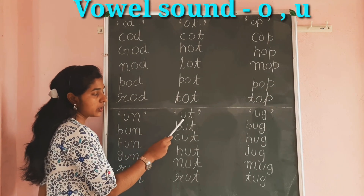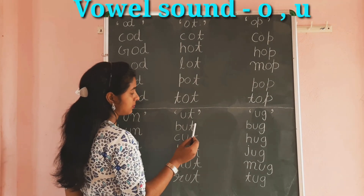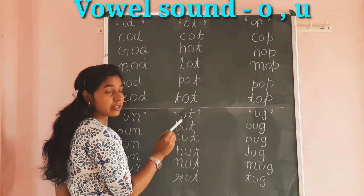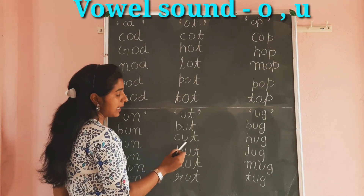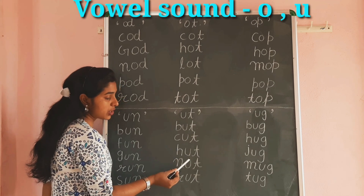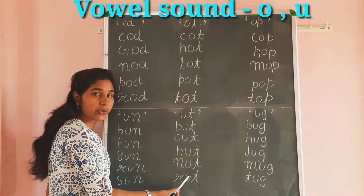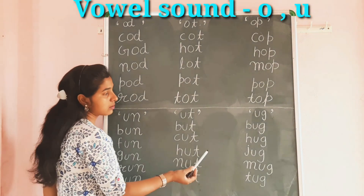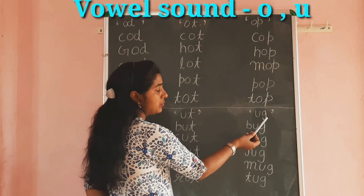Next is U-T: B-U-T, But. C-U-T, Cut. H-U-T, Hut. N-U-T, Nut. R-U-T, Rut.